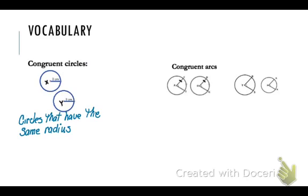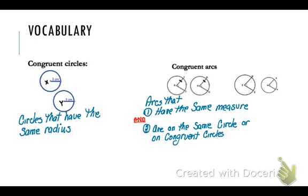Another way you can find congruent circles, so congruent arcs are arcs that have two things and they have to have both of these things or they are not congruent arcs. First they have to have the same measure. So they have to have the same central angle. And they also have to be either on the same circle or on congruent circles.